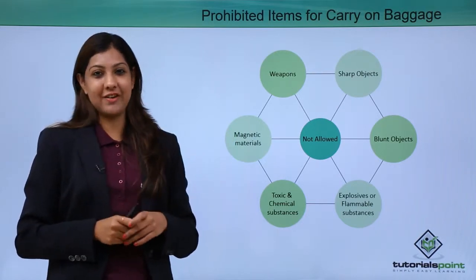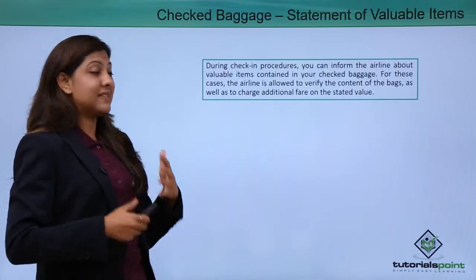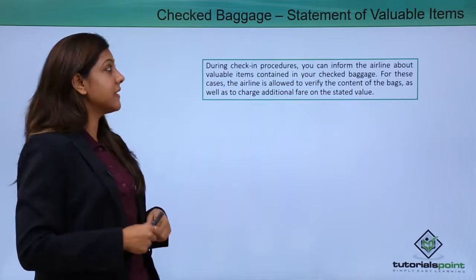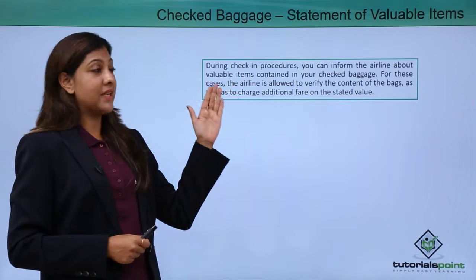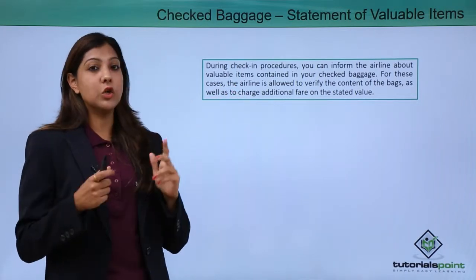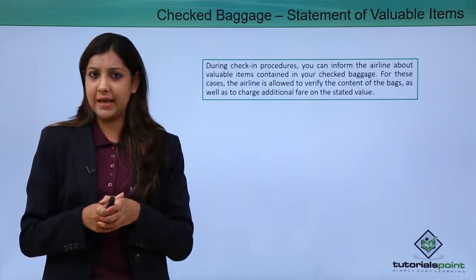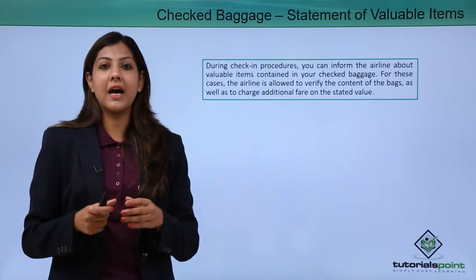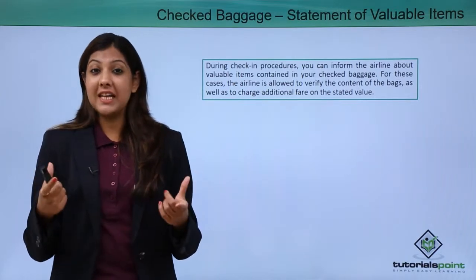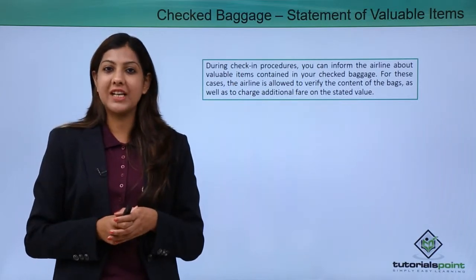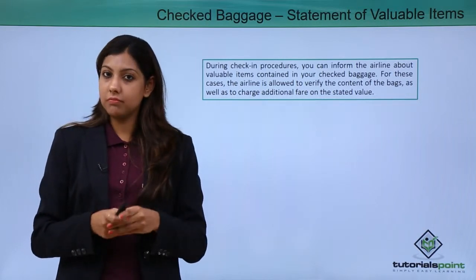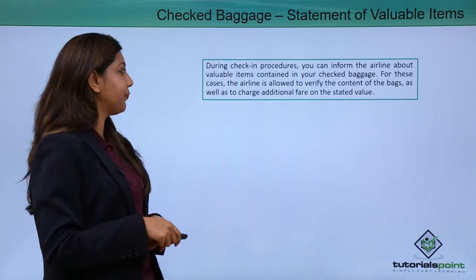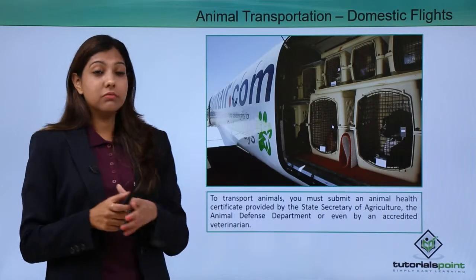Regarding checked-in baggage, you can inform airline staff during check-in procedures about any valuable items inside your checked-in baggage. The ground staff will provide a fragile item label which you can put on your checked-in baggage. It is good practice to inform the ground staff if you are carrying anything valuable inside your checked-in baggage.